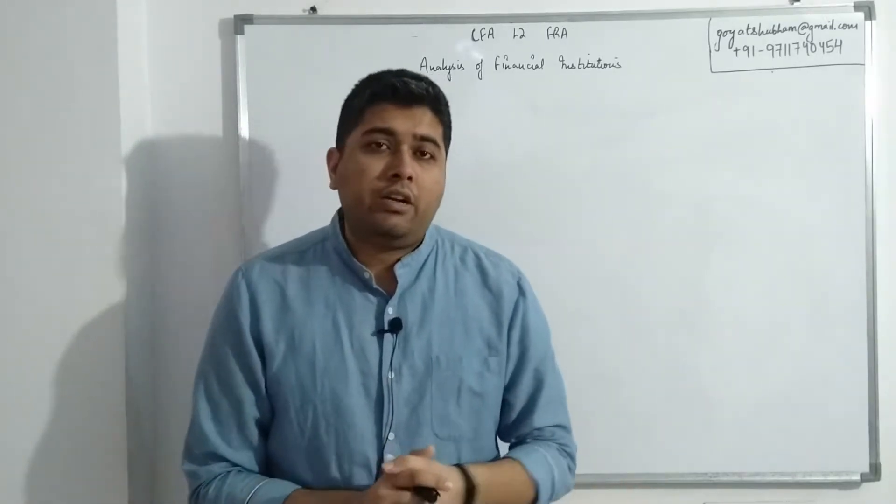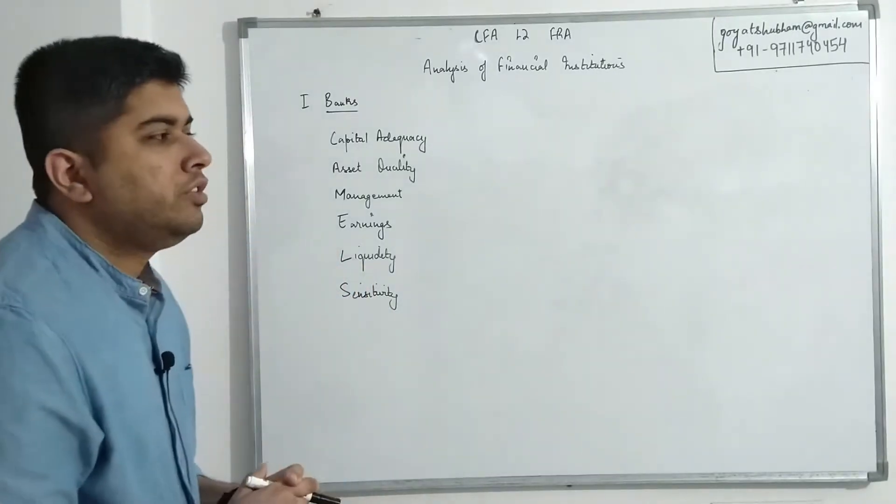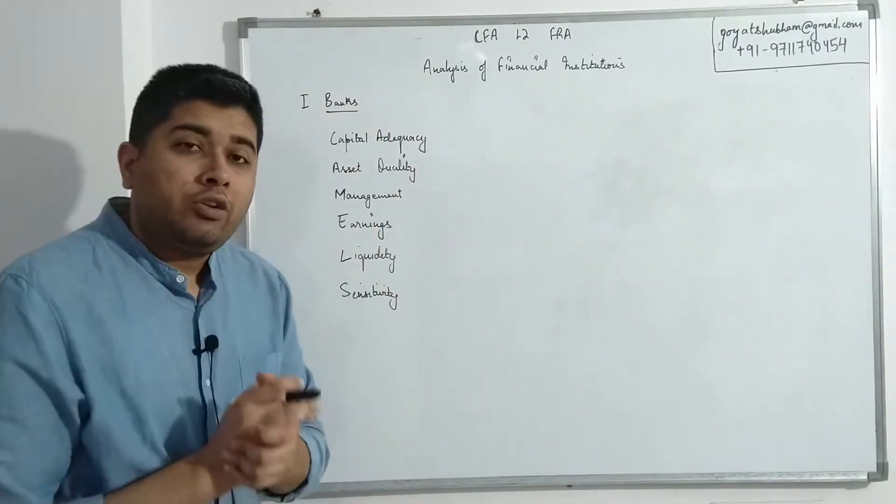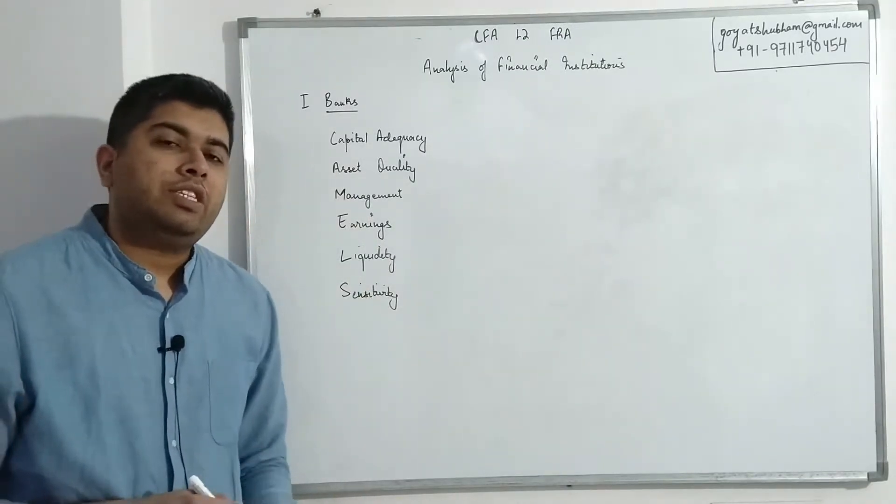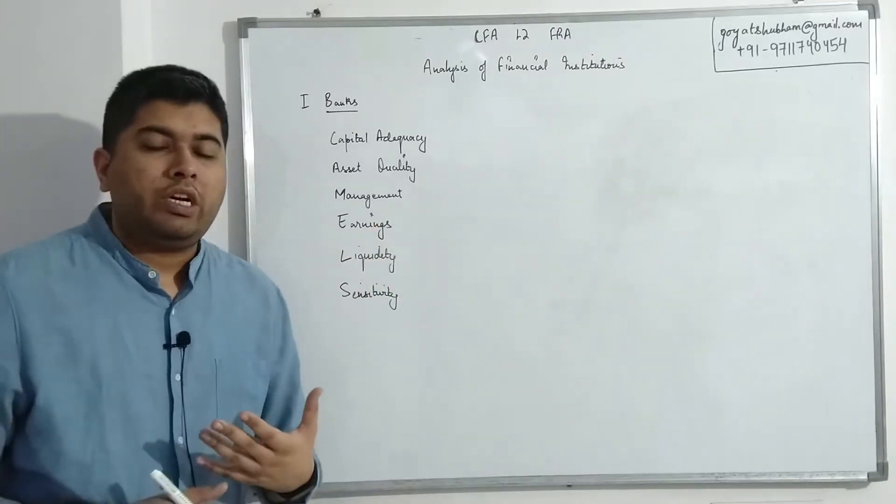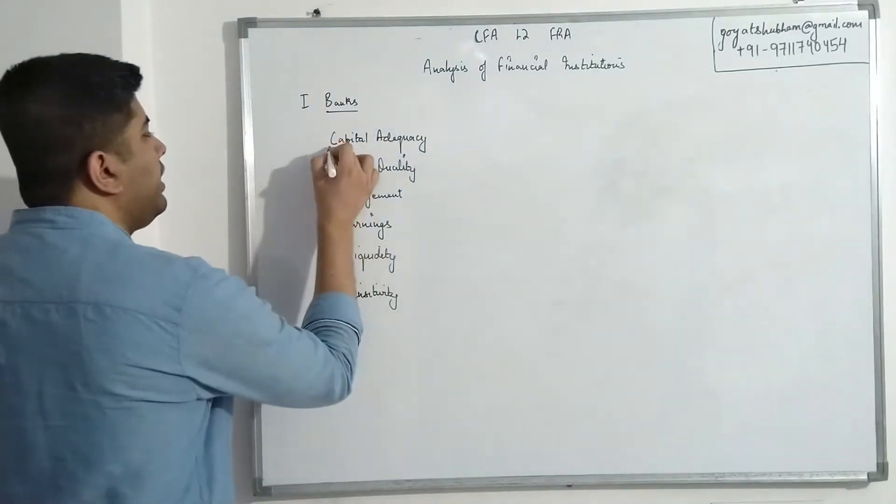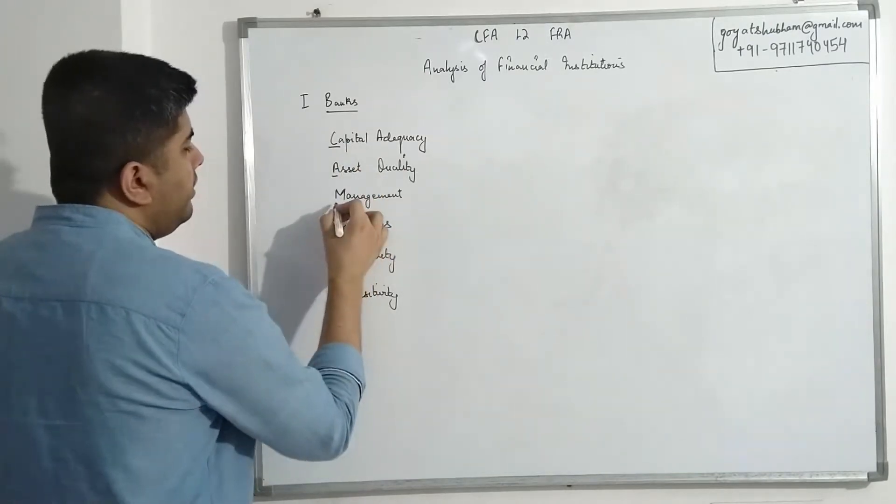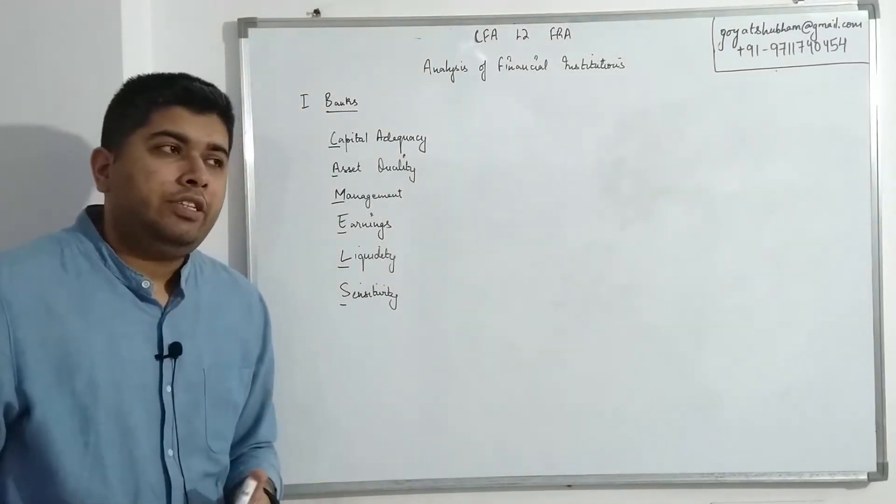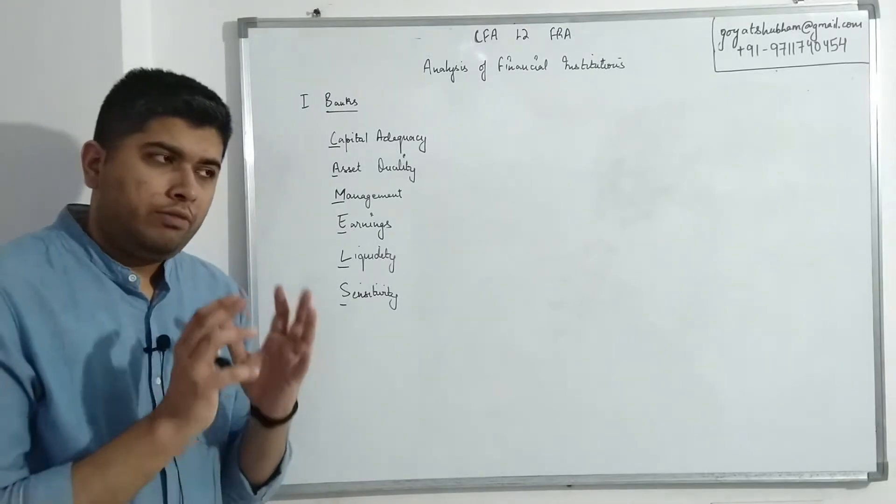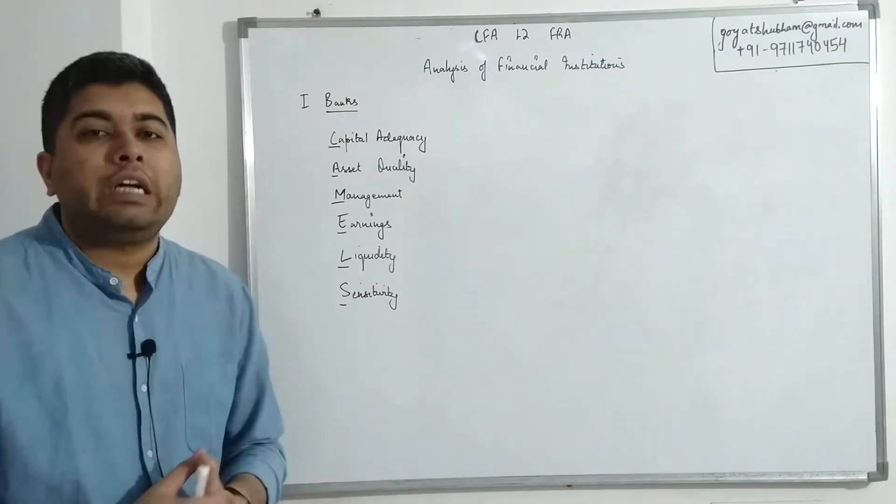With all of that out of the way, we have two major components to discuss: how we deal with banks and how we deal with insurance companies. Let's start with banks. Your syllabus is stressing on one particular process or analysis parameter that we use which is called the CAMELS approach: Capital adequacy, Asset quality, Management, Earnings, Liquidity, and Sensitivity.